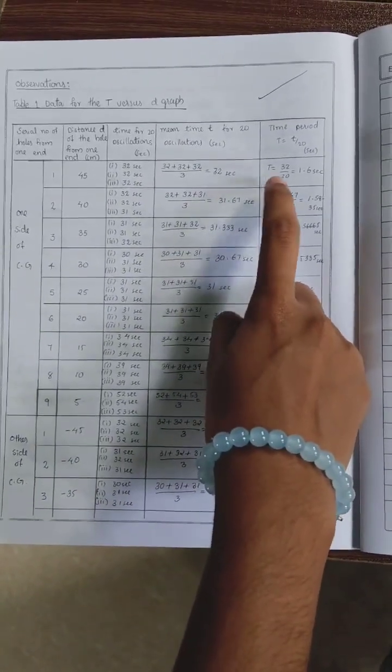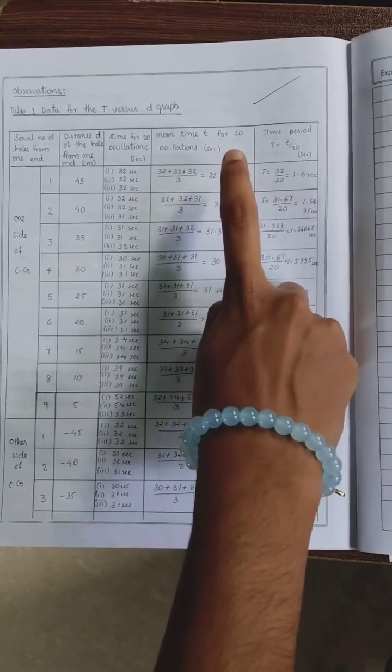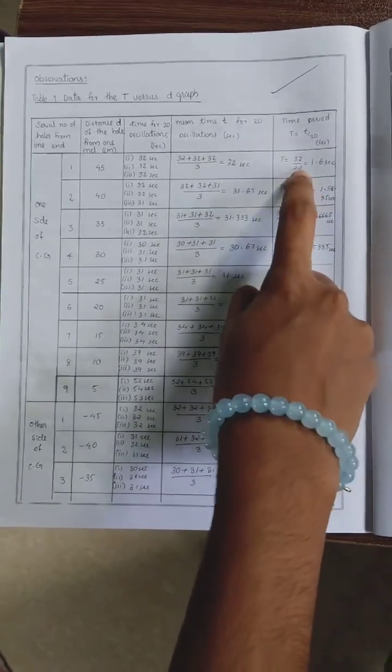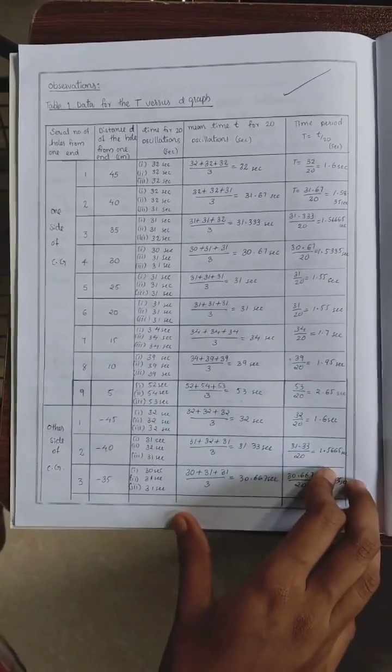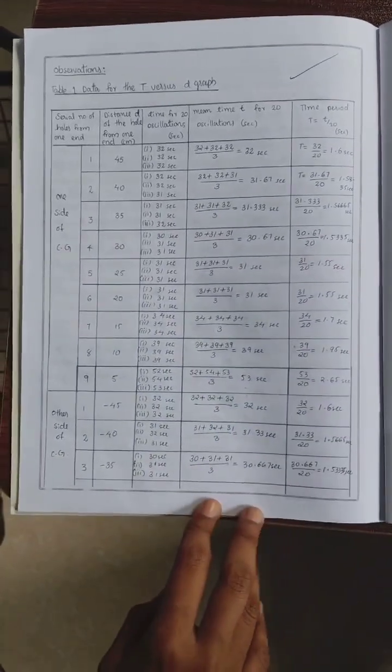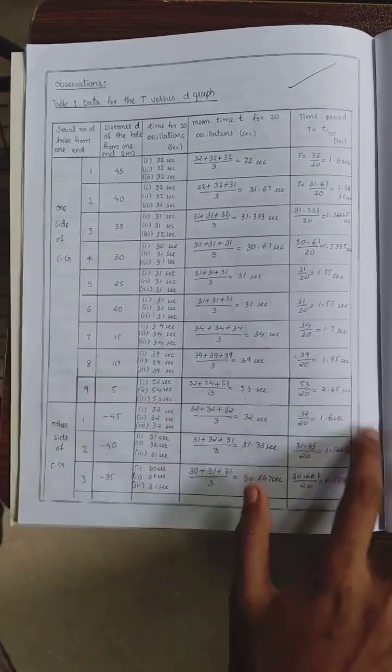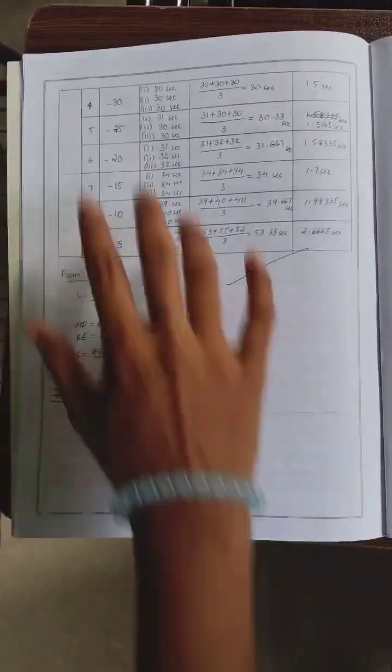Then, from this, calculate the time period by taking mean time divided by 20 to get the time period. Repeat this experiment by inverting the bar pendulum. We will get like this. These are the values.